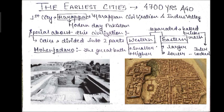Mohenjodaro is the well-known site of this civilization, and its most distinctive feature was the Great Bath. There were rooms on three sides; one room had a very big well filled with water, used by important persons for some ritualistic purpose. There were flights of steps in the north-south direction leading into the bath.